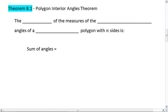Theorem 8.1, Polygon Interior Angles Theorem. This theorem tells us that the sum of the measures of the interior angles of a convex polygon with n number of sides is going to be n minus 2 times 180.